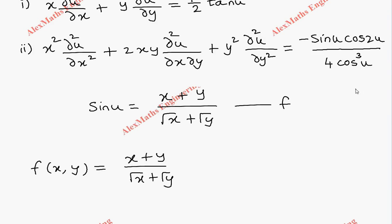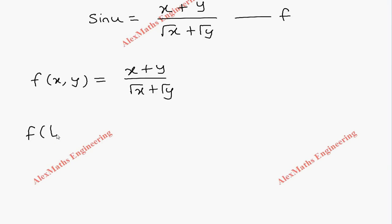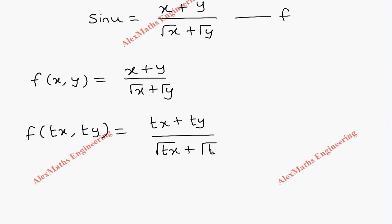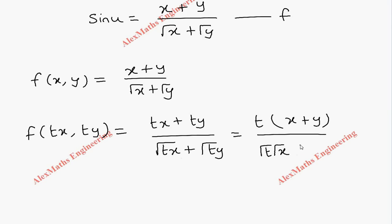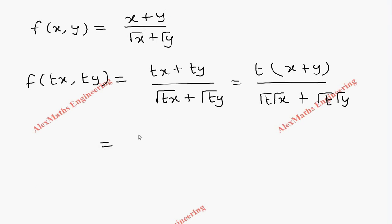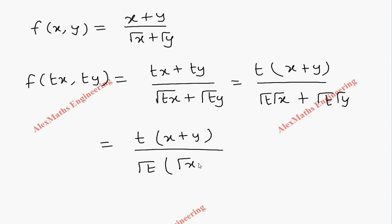After this we have to check whether it is a homogeneous function or not. For that we have to replace x as tx and y as ty. So the numerator is tx plus ty divided by denominator root(tx) plus root(ty). From the numerator we can take t common, leaving x plus y. From the denominator, root(tx) = root(t)·root(x) and root(ty) = root(t)·root(y).